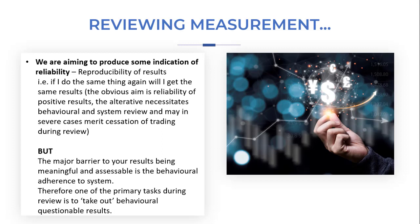We are aiming to produce some indication of reliability, as stated in the first video. What we mean by this in more detail is a reproducibility of results — that is, if I do the same thing again, will I get the same results? The obvious aim is a reliability of positive results. If we have a reliability of negative results, we want to stop trading right now and review the system we're using.